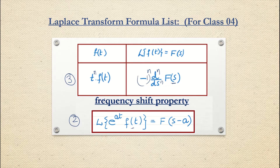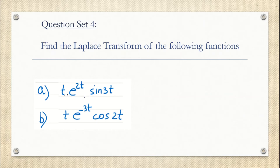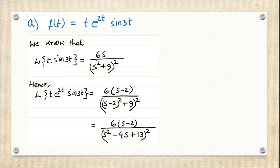We are using these two formulas in today's class to solve different types of questions — with t, with e raised to at, along with any function f(t). Suppose it was just t·sin 3t, you can solve it using the multiply-by-t formula, and suppose it is e^(2t)·sin 3t, then you can use the frequency shift property. But what we are going to do in the case when we have questions where t·e^(at)·sin 3t or cos 2t or any function is present — we are going to see these types of questions.